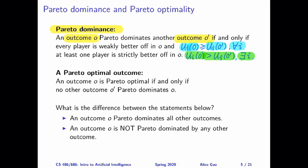Given that we have defined a way of comparing two outcomes using Pareto dominance, we're now ready to define what it means for an outcome to be Pareto optimal. An outcome O is Pareto optimal if and only if no other outcome O prime Pareto dominates O. So there does not exist another outcome that Pareto dominates O — if this is true, then the outcome O is Pareto optimal.